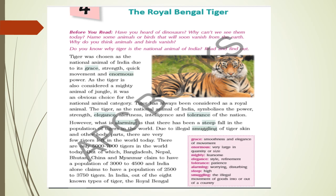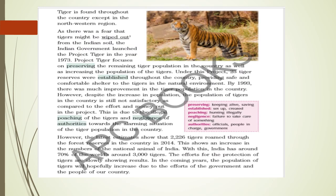In India, out of the 8 known types of tigers, the Royal Bengal Tiger is found throughout the country except in the north-western region. So it is found in the entire country except those north and west areas.